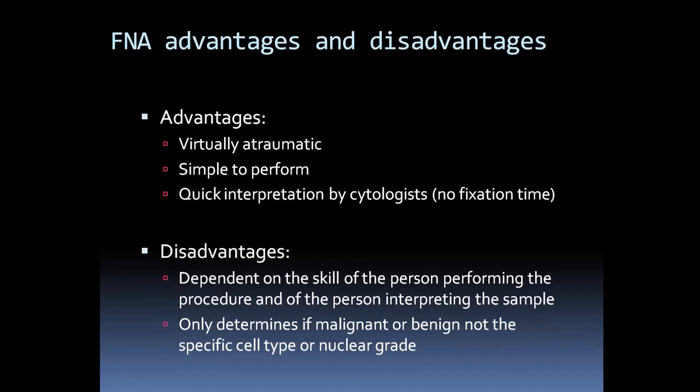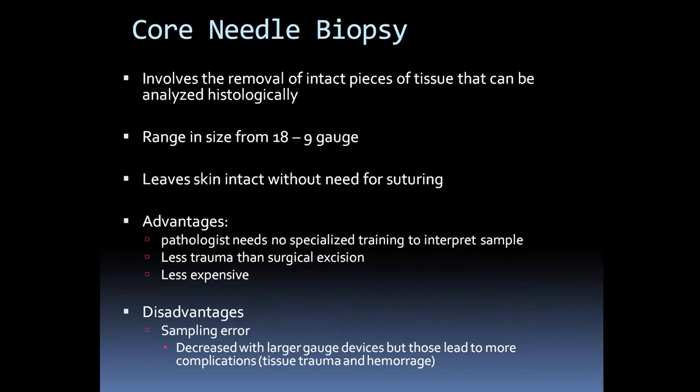Advantages of FNA include that it is virtually atraumatic using a small-bore needle, simple to perform, and a cytologist can interpret it immediately — on-site cytopathologists can read it right away, whereas core biopsy requires at least 48 hours of fixation and staining. Disadvantages include that it is very skill-dependent both for the person performing it and the cytologist interpreting it, and we can't get all the information we'd like about cancers from FNA alone.